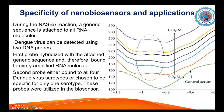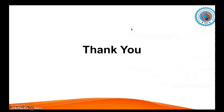During the NASBA reaction, a generic sequence is attached to all molecules. Dengue virus can be detected using two DNA probes, and using these two probes the biosensor detects the target. On the right side, a sensitivity graph shows different samples ranging from as low as 0.0 micromolar to 10 micromolar concentration of virus, demonstrating that a biosensor can read even the most minimal amount of virus present in a sample. More advanced techniques are being developed to further increase the sensitivity and specificity of nanobiosensors. Thank you very much.